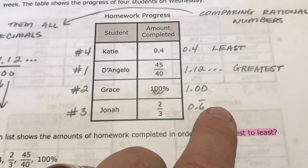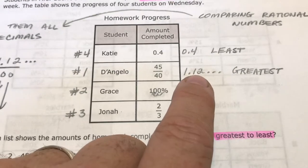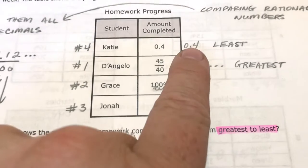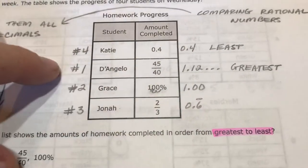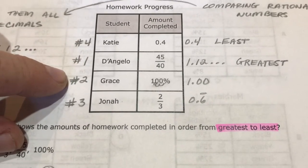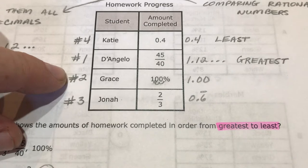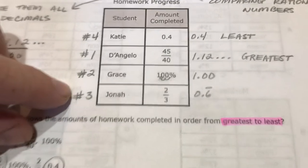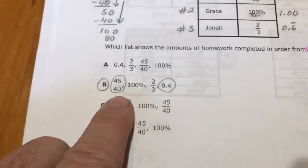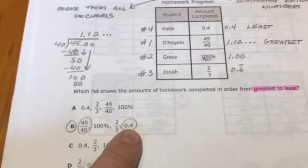There's only one answer choice that starts with that and ends with that. But you can put them all in order just by looking at the decimals. This is the biggest, this comes next, then 0.6, then 0.4. So we need 45 over 40, 100%, 2/3, and then 0.4.